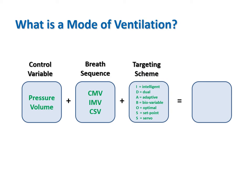Targeting scheme is the software programming the ventilator uses to achieve the desired targets. Targeting schemes have evolved from simple ones that require manual adjustment to complicated ones with various degrees of automation. At the present time, there are seven targeting schemes used to create dozens of different modes, and sometimes multiple targeting schemes are used in a single mode.